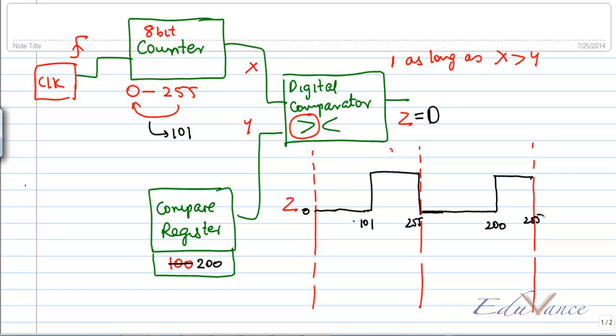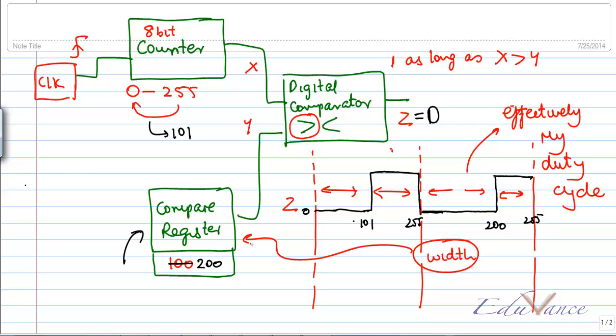So you can see that by changing this compare register, the value in the compare register, I can actually vary the off time and the on time, again the off time and the on time, which is effectively my duty cycle. So you can actually vary the width of the pulse using this compare register.